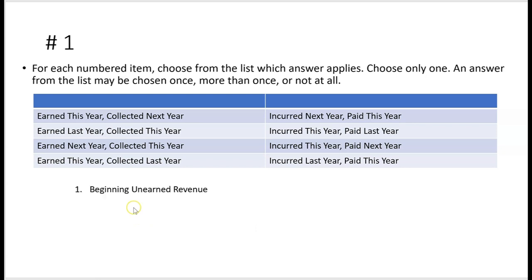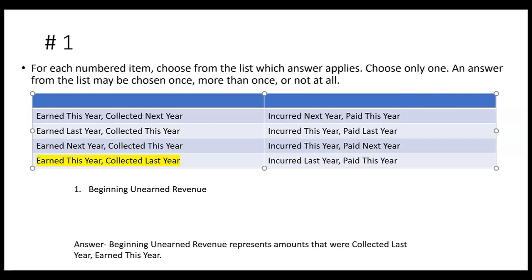Now that we've gone through the list, let's go to our first numbered item. Number one says beginning unearned revenue. The current liability unearned revenue — the beginning balance of it — represents what was collected last year and earned this year. So for number one, beginning unearned revenue: earned this year, collected last year. When we earn it, we debit unearned revenue and credit revenue or fees earned, and that's usually a year-end adjusting entry.